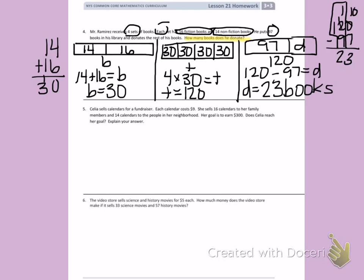Number 5. Celia sells calendars for a fundraiser. Each calendar costs $9. She sells 16 calendars to her family members and 14 calendars to the people in her neighborhood. Her goal is to earn $300.